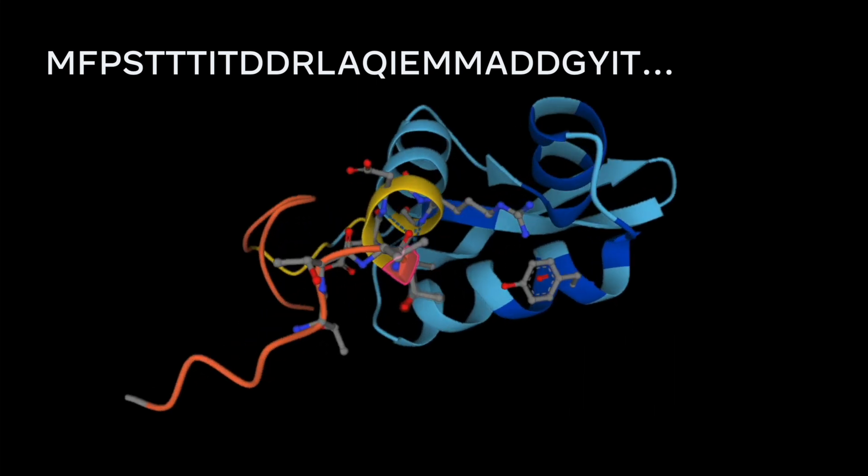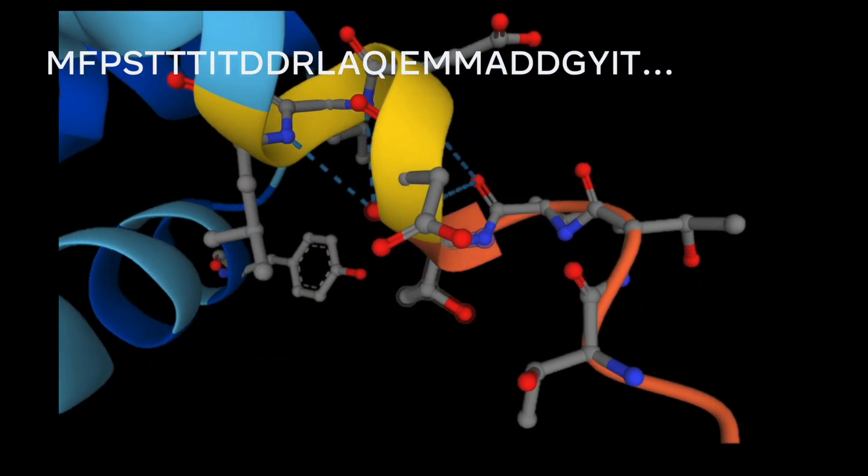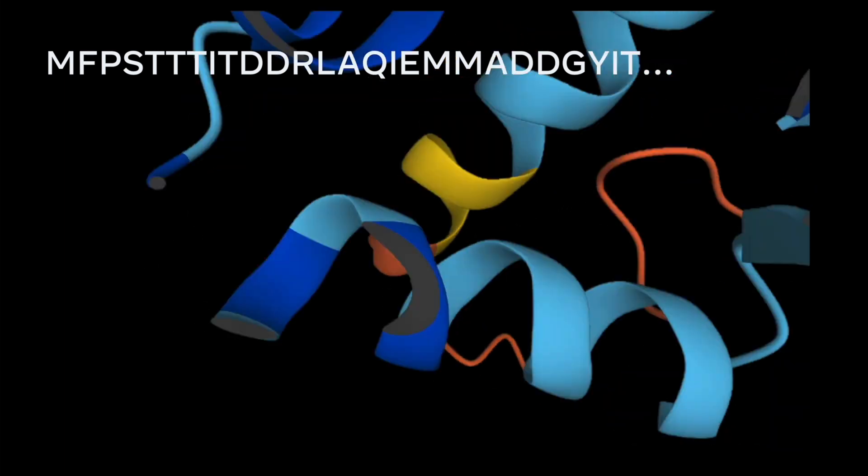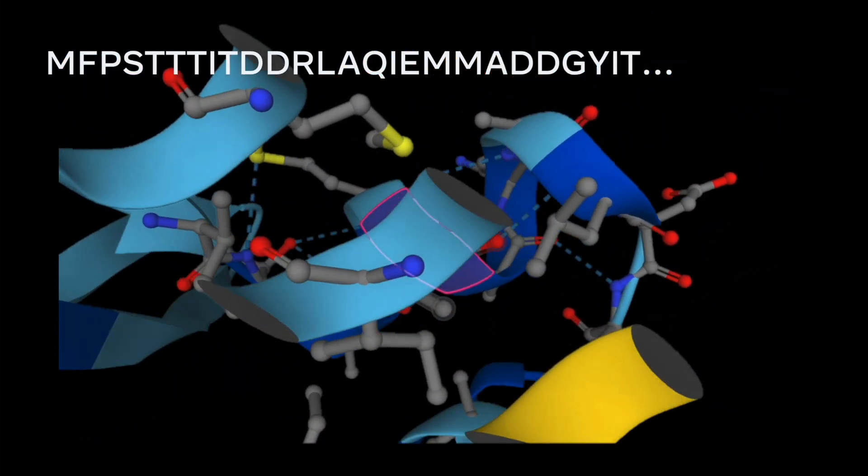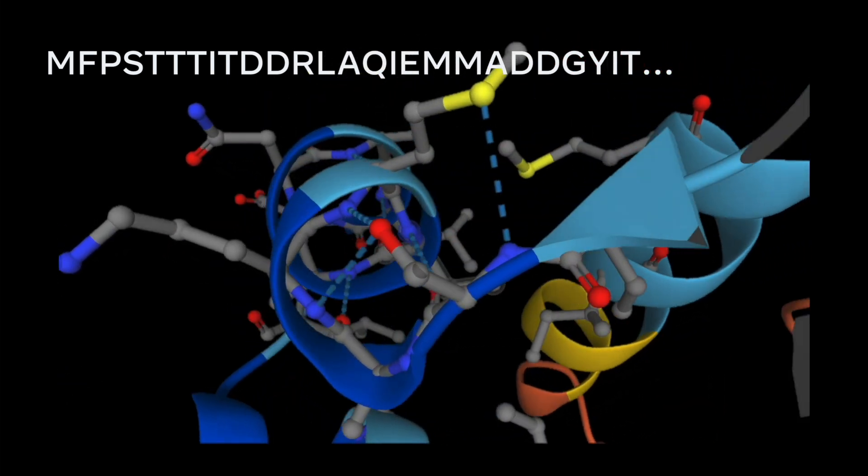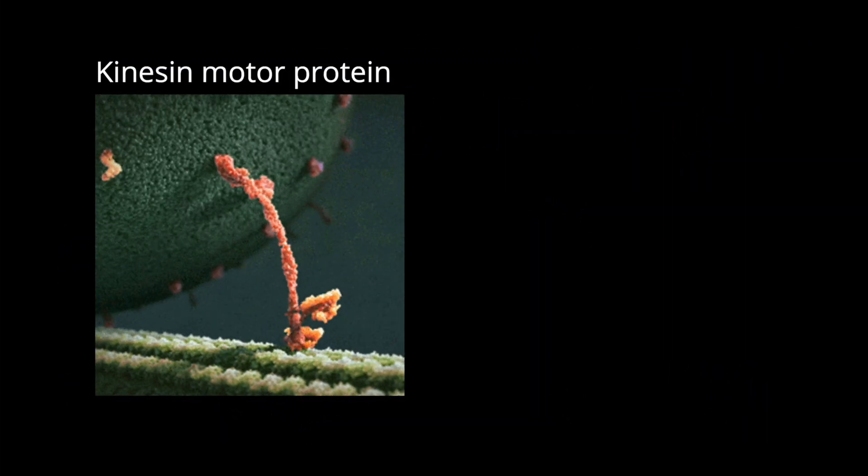So if we zoom in on the proteins, you can see that each of these ribbons actually is just representing different configuration of atoms. And this configuration of atoms determines how the protein folds, how it interacts with other small molecules, and how it might even move.